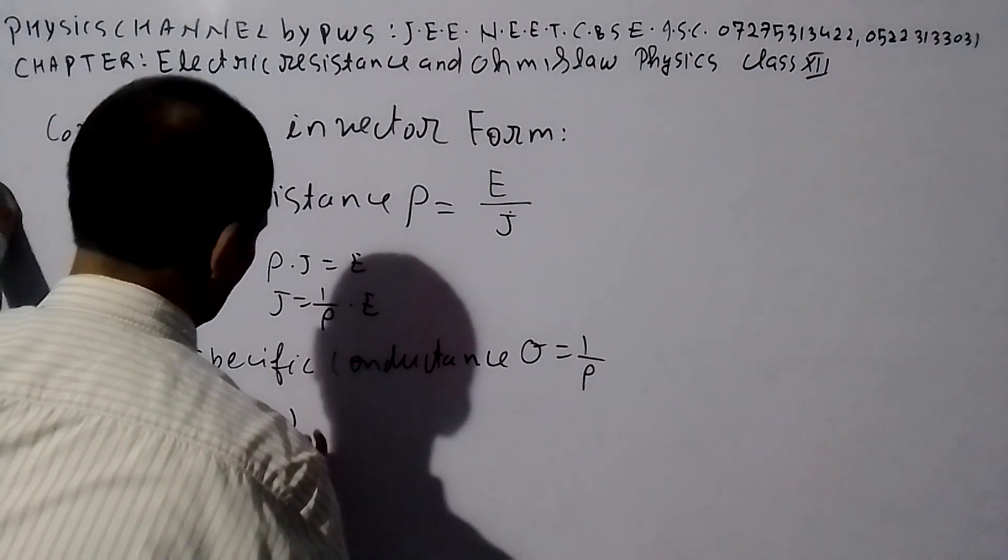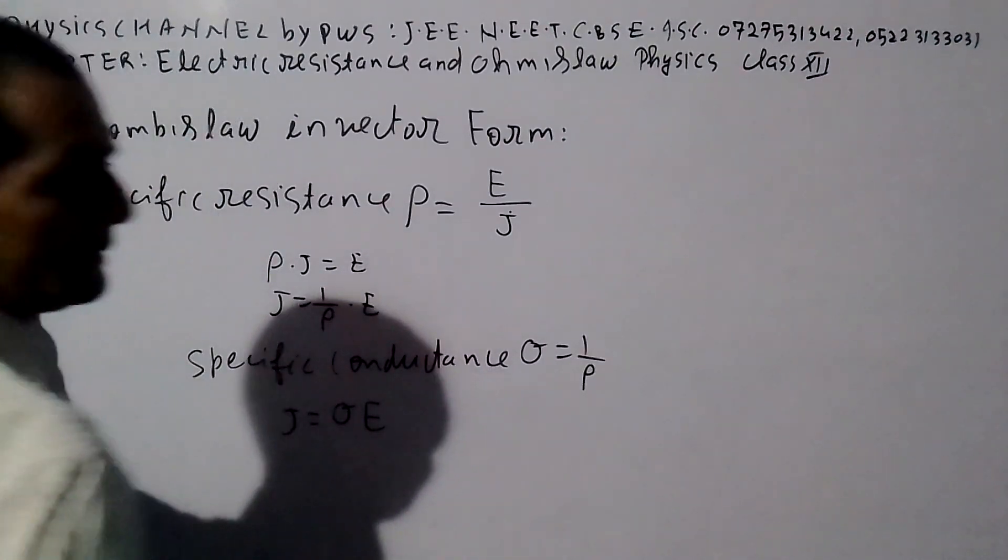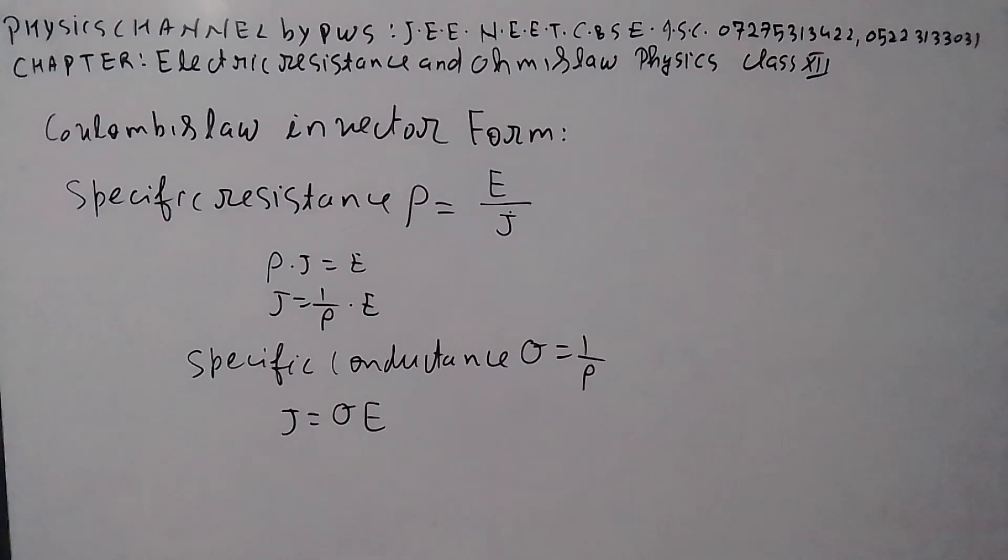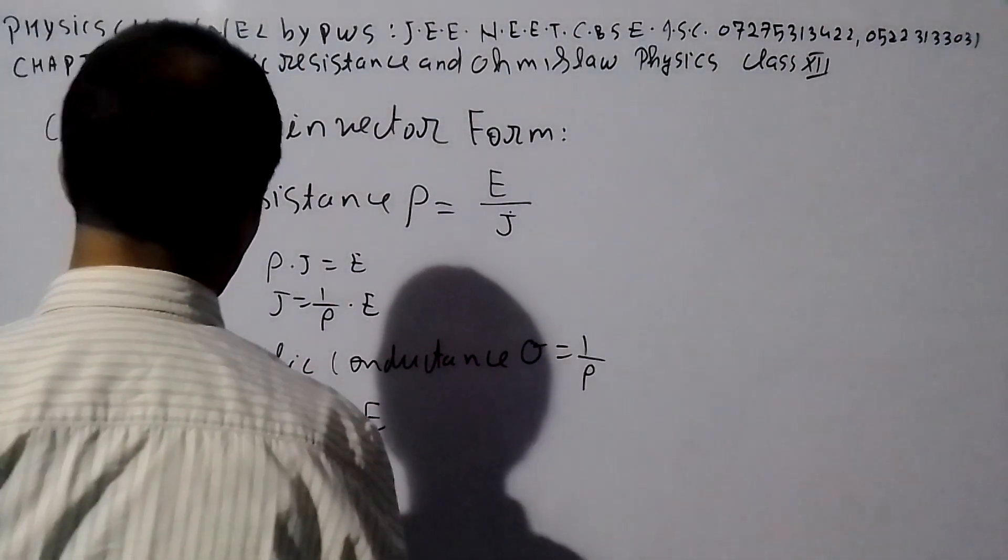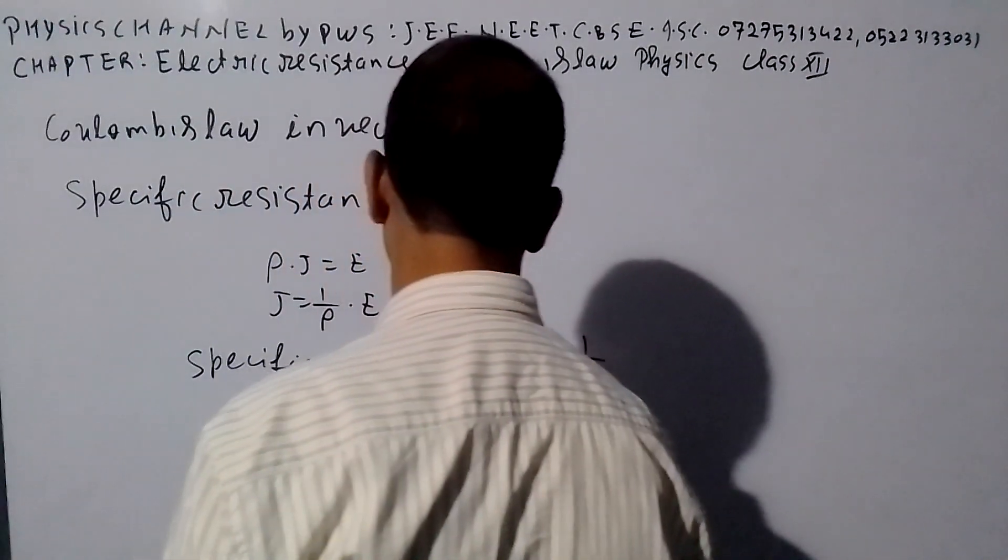So J is equal to sigma into E, sigma into E. This is Ohm's law, this is Ohm's law in vector form.